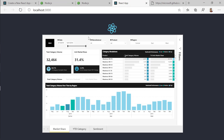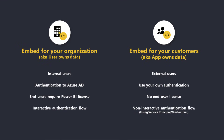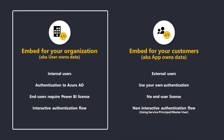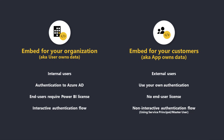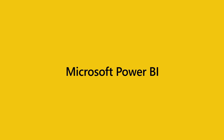The next thing you need to do is set up authentication for your application. This can be either an Azure sign-in if you're embedding for your organization and internal users, or you can use a server-side approach to generate embed tokens for end users who don't have a Power BI license. I hope you enjoyed this video — don't forget to click the like button and subscribe. See you in the next one.